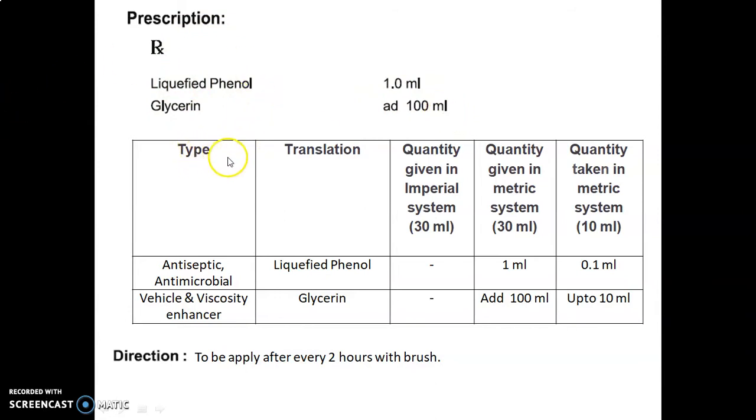Let's discuss the formulation table: type (role or use of ingredient), translation (name of ingredient), quantity given in imperial system (30 ml), quantity given in metric system (30 ml), and quantity taken in metric system (10 ml).